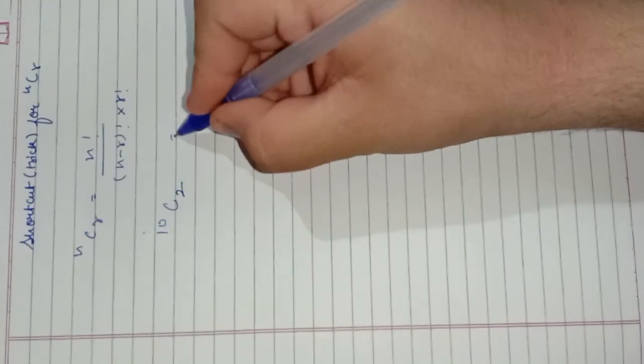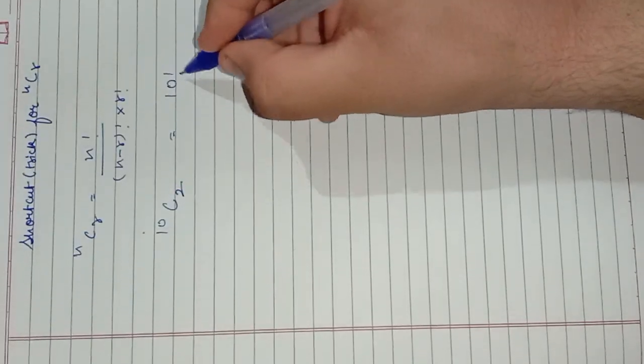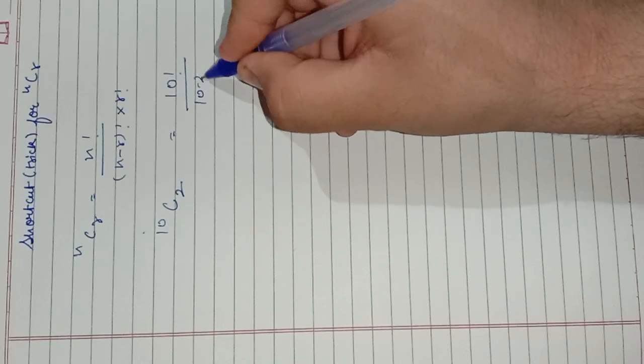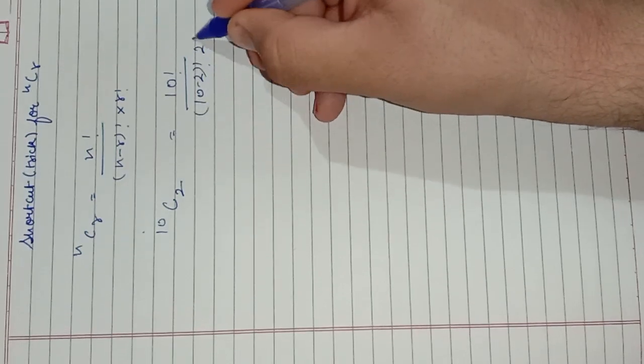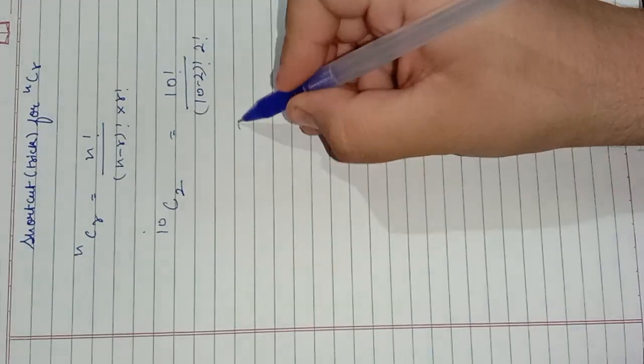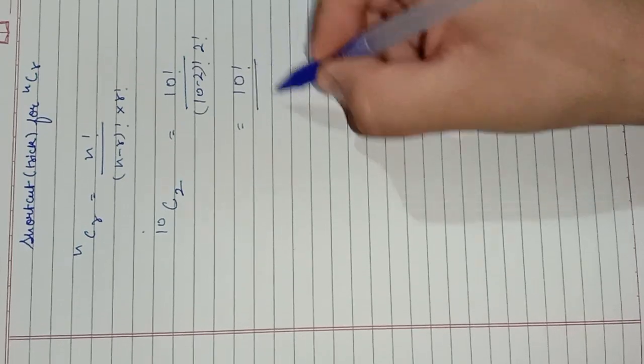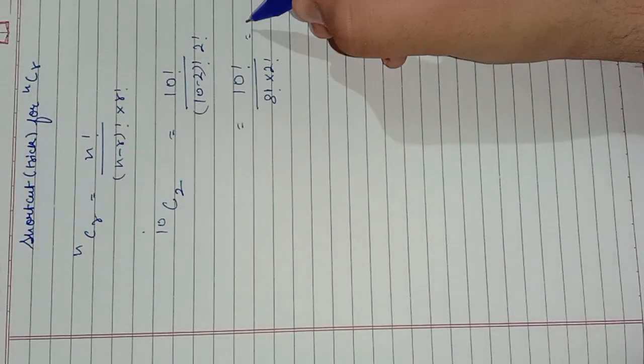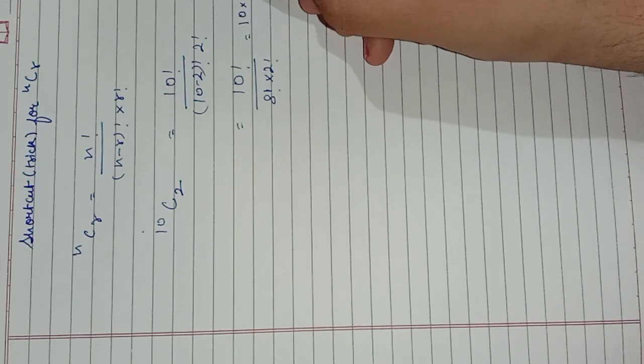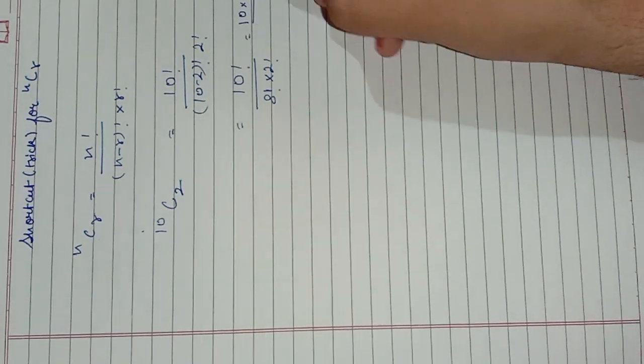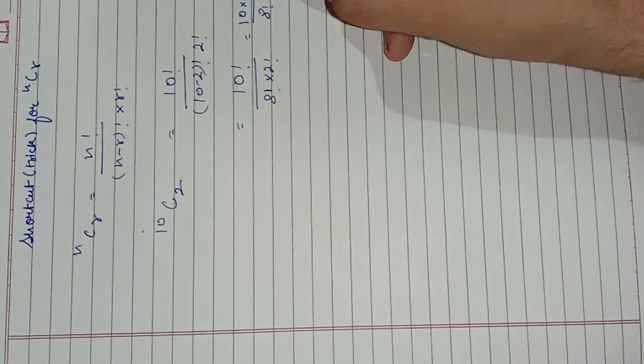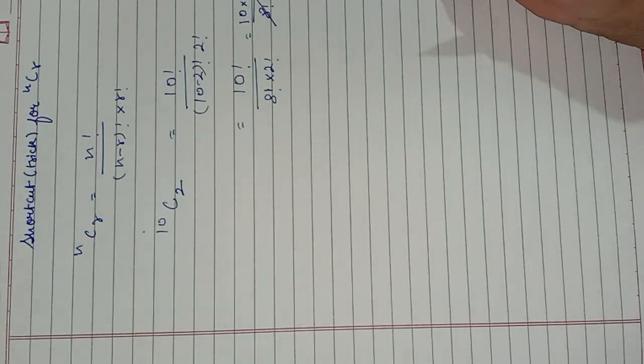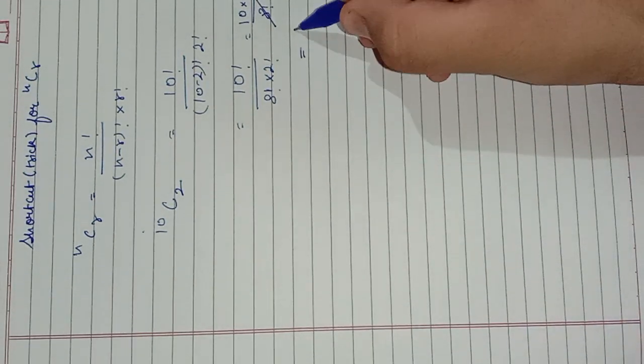So if we are going to see, it is going to be 10 factorial upon 10 minus 2 factorial upon 2 factorial, that is 10 factorial, 8 factorial into 2 factorial. That is 10 into 9 into 8 factorial upon 8 factorial into 2 factorial. So 8 factorial get divided and then we have to do 10 into 9 upon 2 factorial.